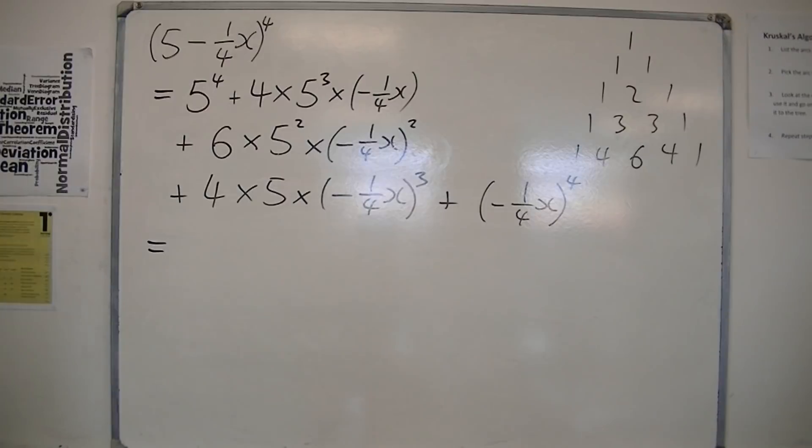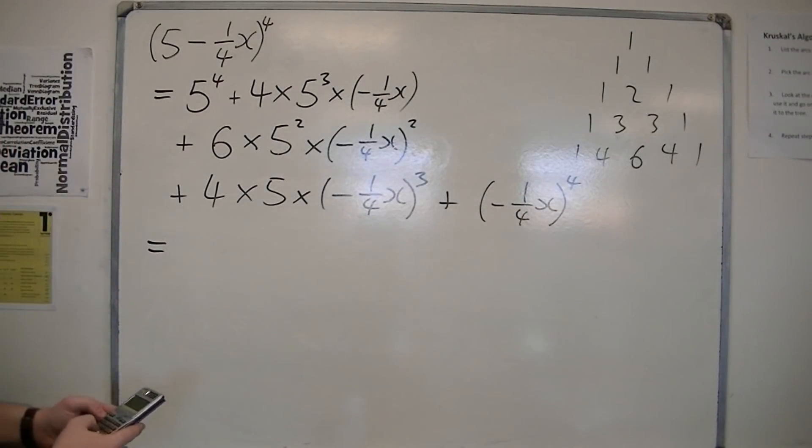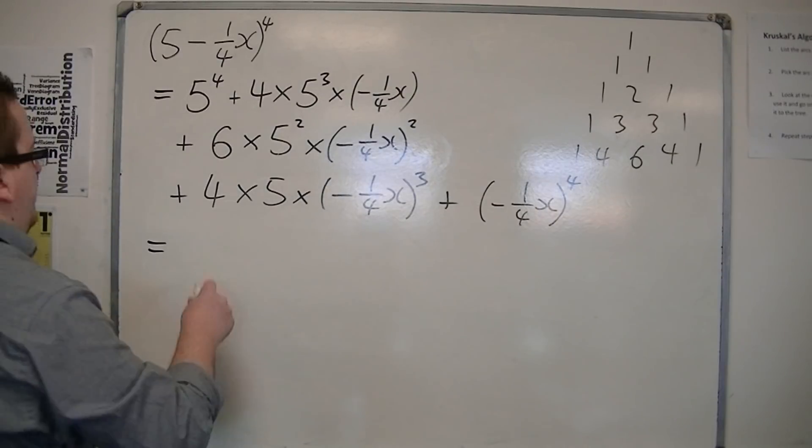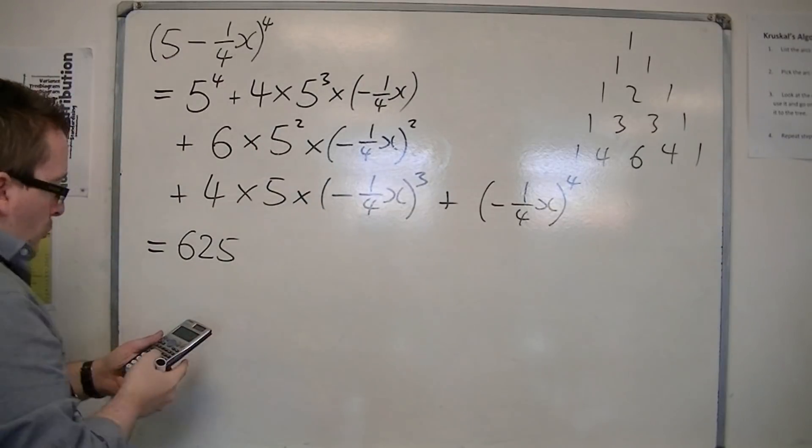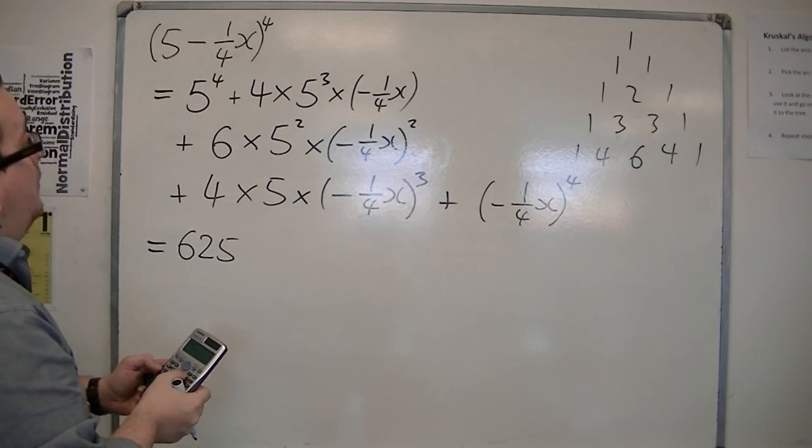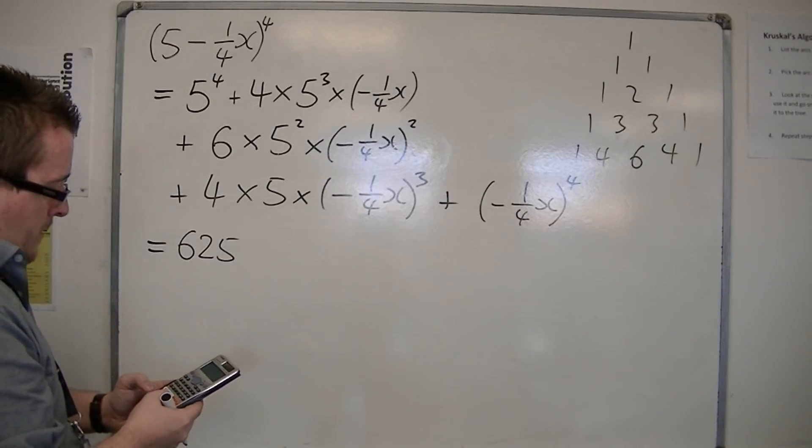So I've got 5 to the power of 4. This is where the calculator comes in. 5 to the power of 4 is 625. And then we've got 4 times 5 cubed times minus a quarter.